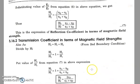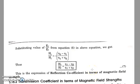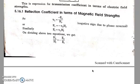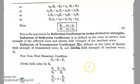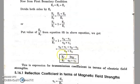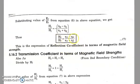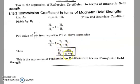So in this lecture we have derived four formulas: the reflection coefficient in terms of electric field strength ER / EI, the transmission coefficient in terms of electric field strength ET / EI, the reflection coefficient in terms of magnetic field strength HR / HI, and the transmission coefficient in terms of magnetic field strength HT / HI — all for the case of a wave incident on a perfect dielectric medium. Thank you very much.